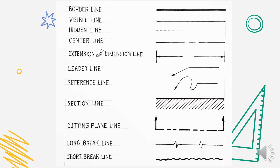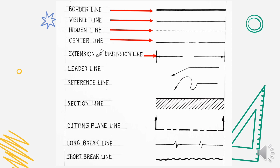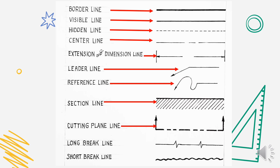So here is the summary of the other alphabet of lines. We have border line, visible line, hidden line, center line, extension line, and dimension line — they are always partners. Dimension line has arrowheads and numerical values; extension line delimits it. We also have leader line, section line — which is usually at 45 degrees and thin — cutting plane line, long break line, and short break line.